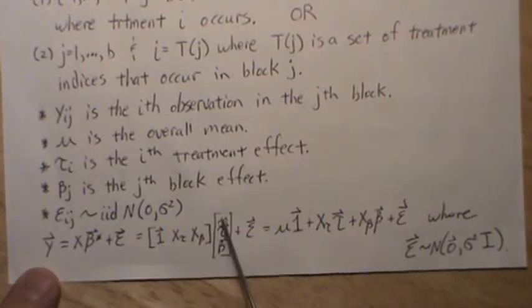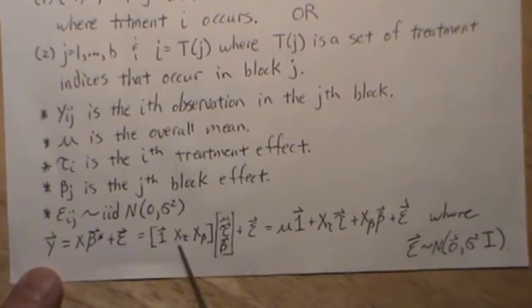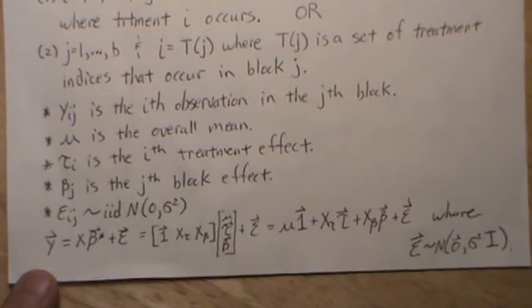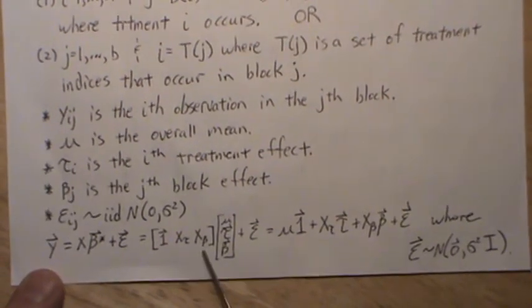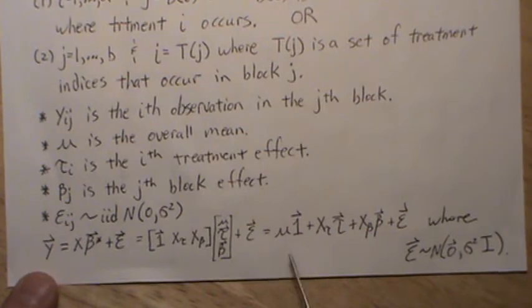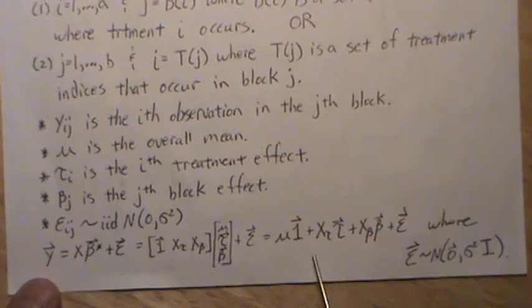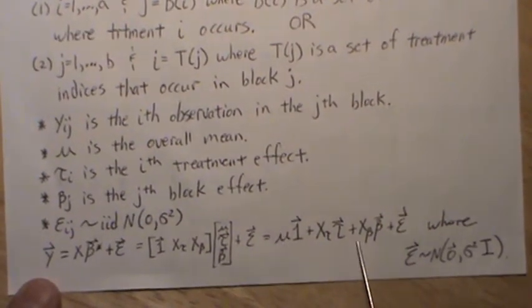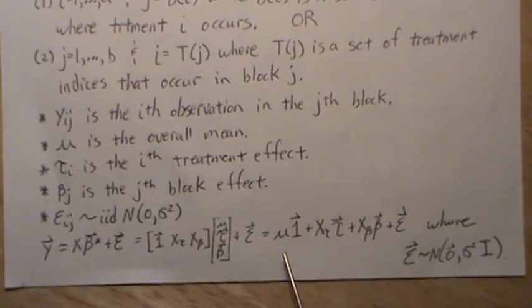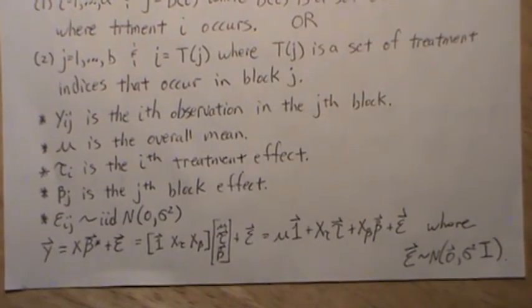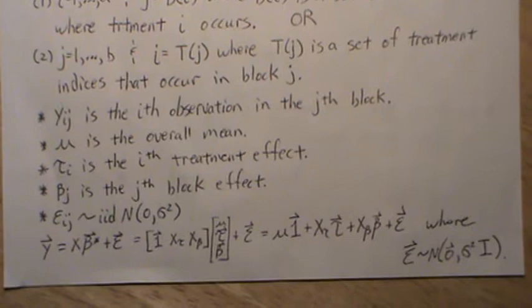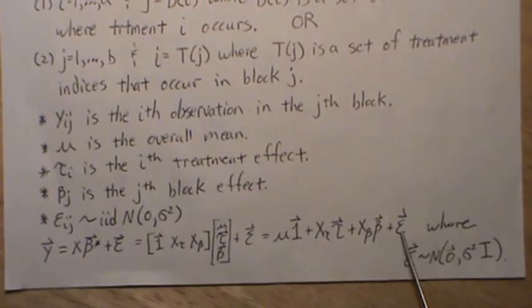If you were to do this multiplication, it's also commonly written like this: mu times one, X_tau times tau, X_beta times beta, plus epsilon, where epsilon is multivariate normal with mean vector zero and variance-covariance matrix sigma squared I.